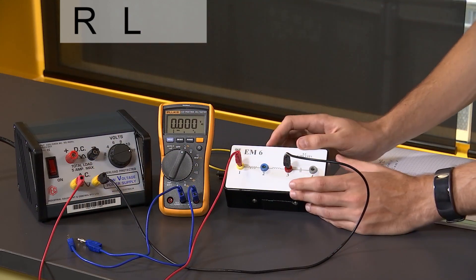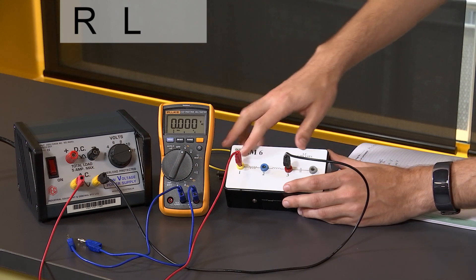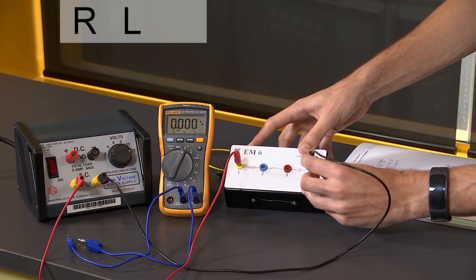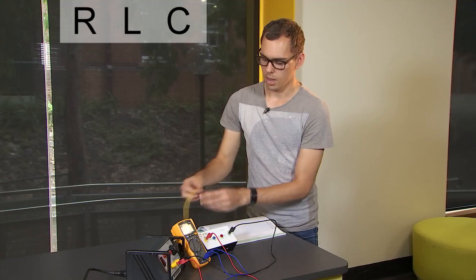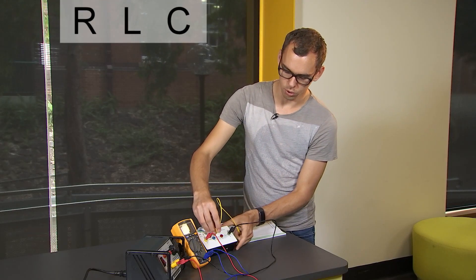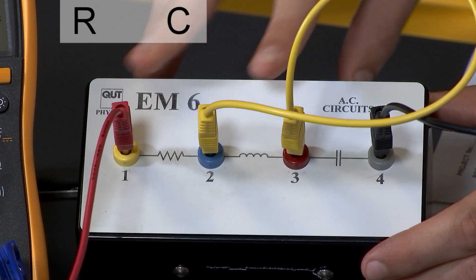Now to build the RC circuit I'm going to put the power supply across pins one and four and use another lead to short circuit the inductor across pins two and three.